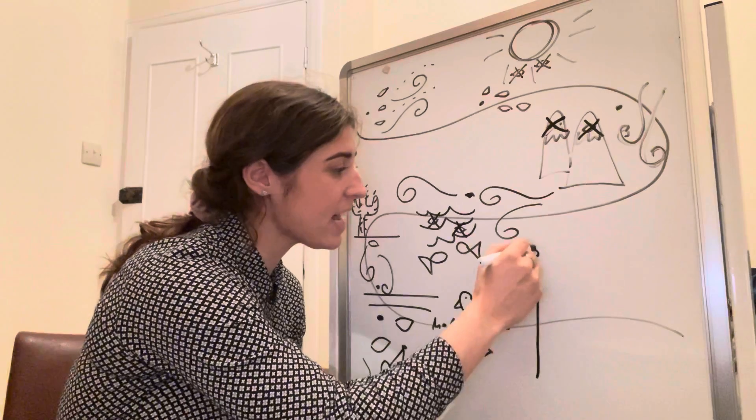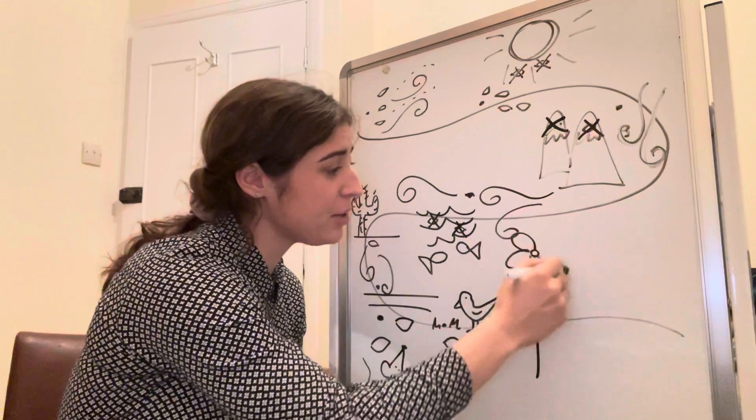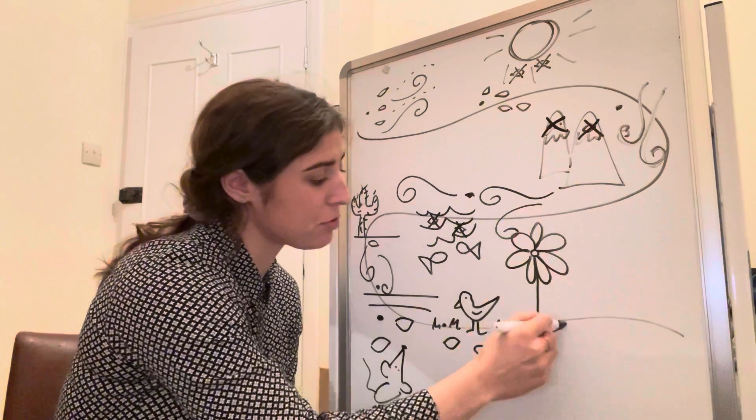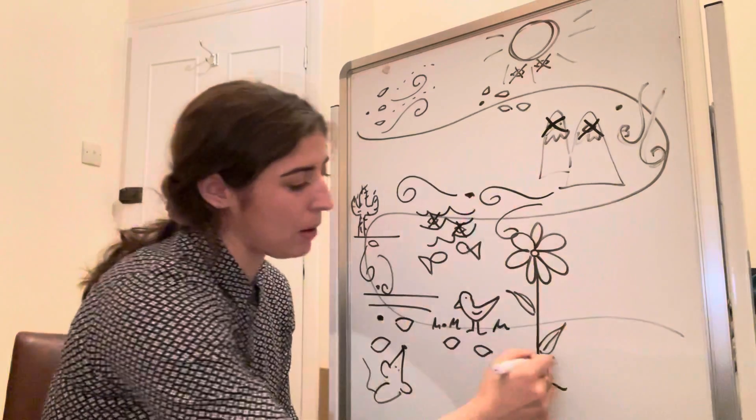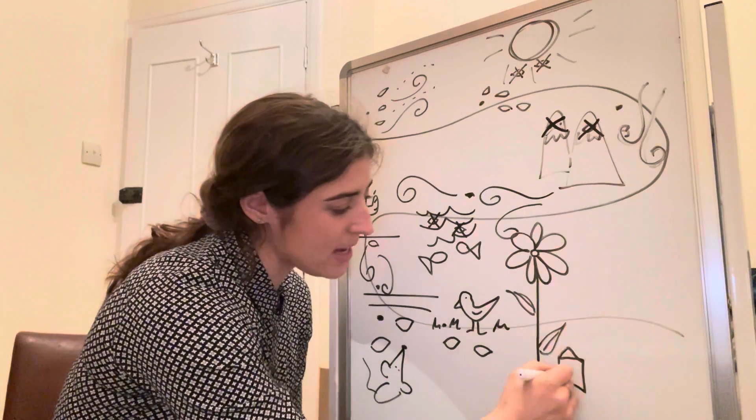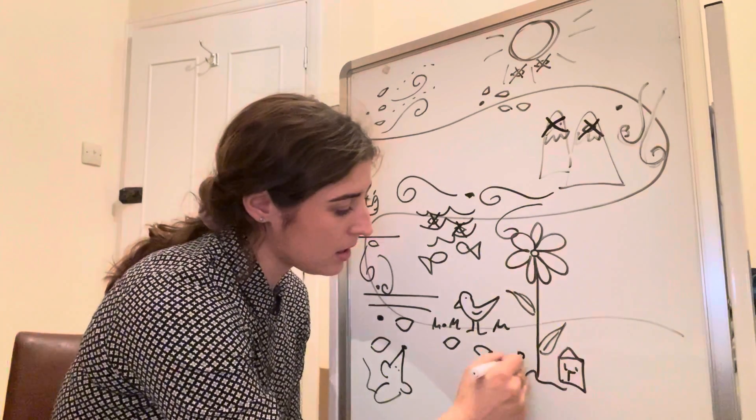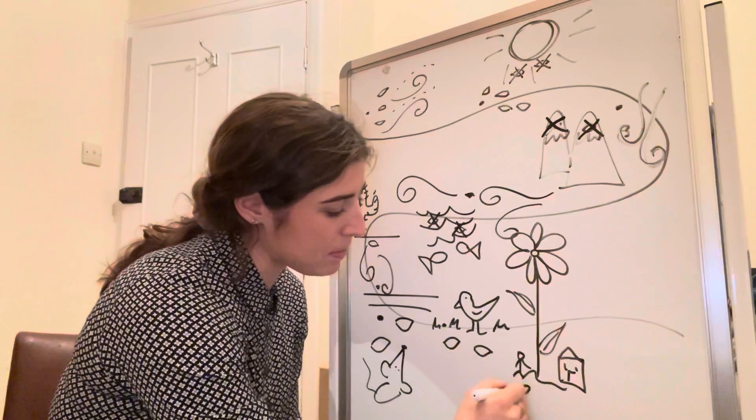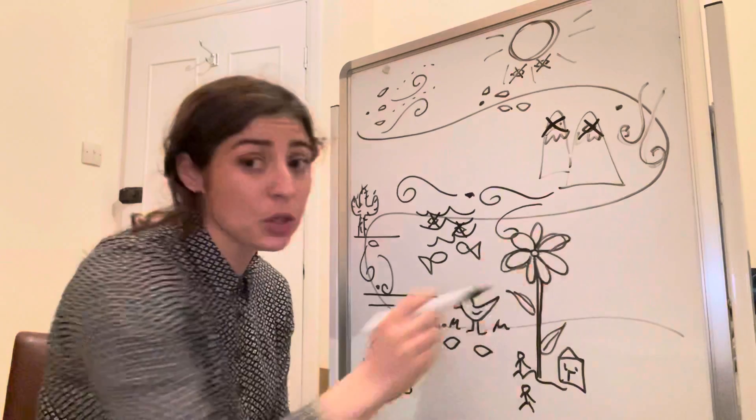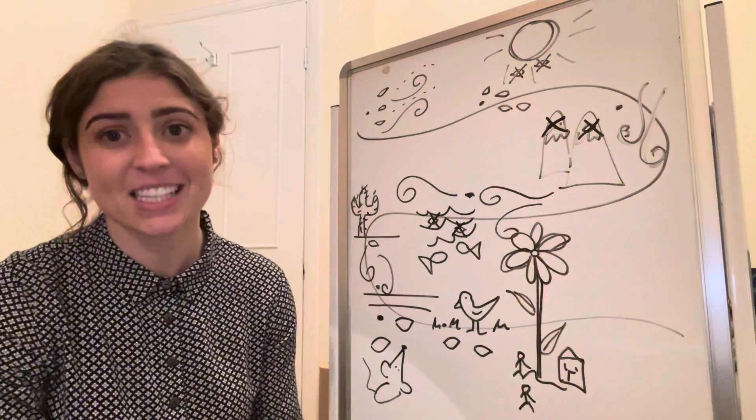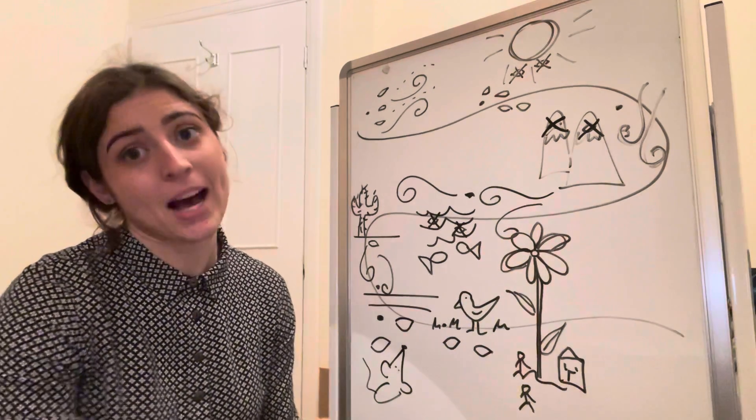And then the seed eventually grows into a really big flower, doesn't it? It's ginormous. So I'm going to draw that on my storyboard as well. There it is, a big big flower, bigger than all the houses and all the people. There's my little stick people there, looking up at this ginormous flower. It's huge, ginormous.